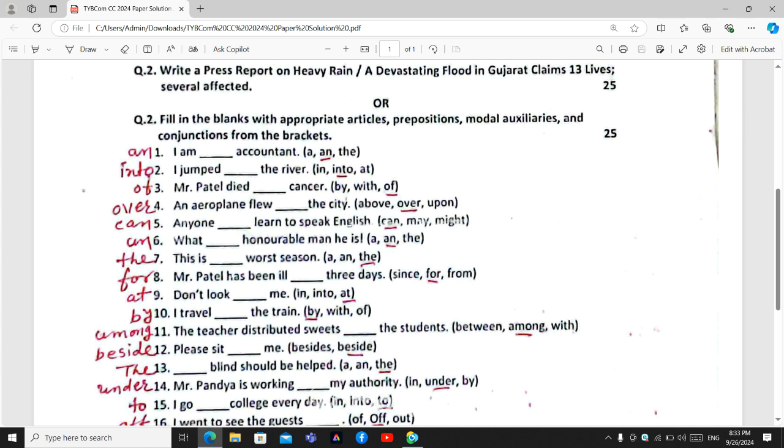Blank number seven. This is the worst season. Why we put the because it is the article and the word worst is in superlative form. So we always put the...